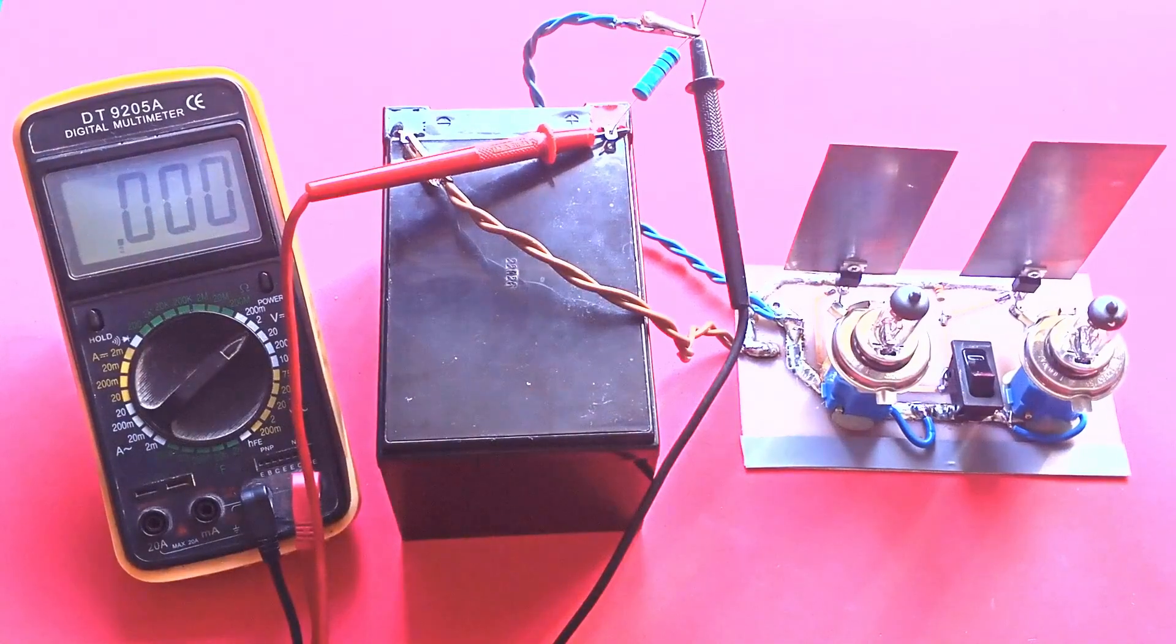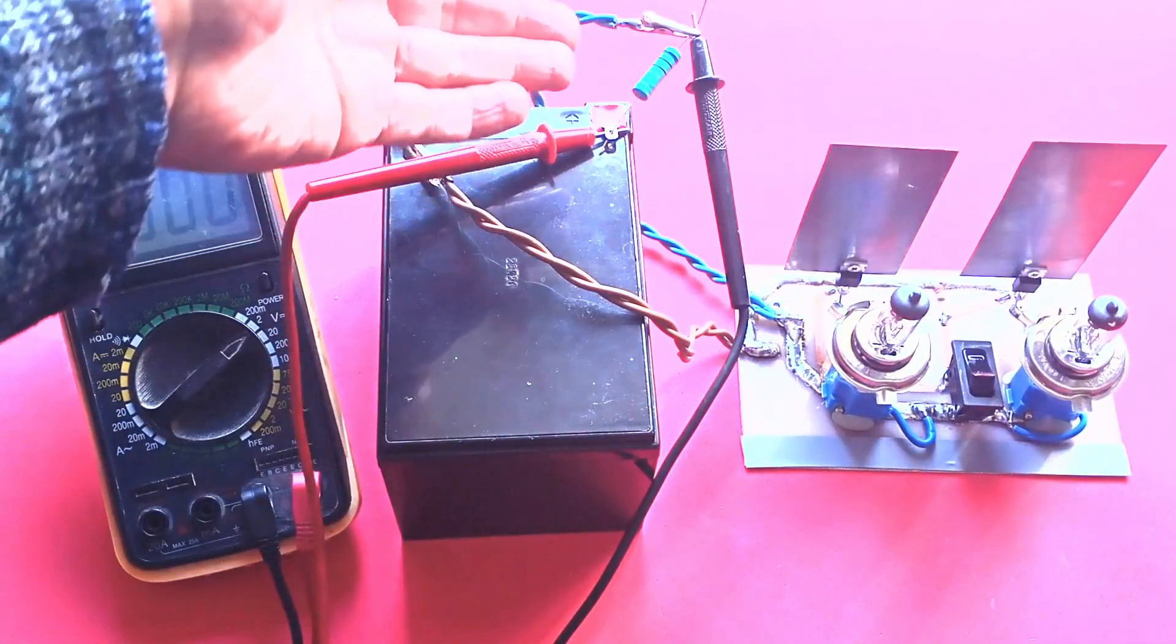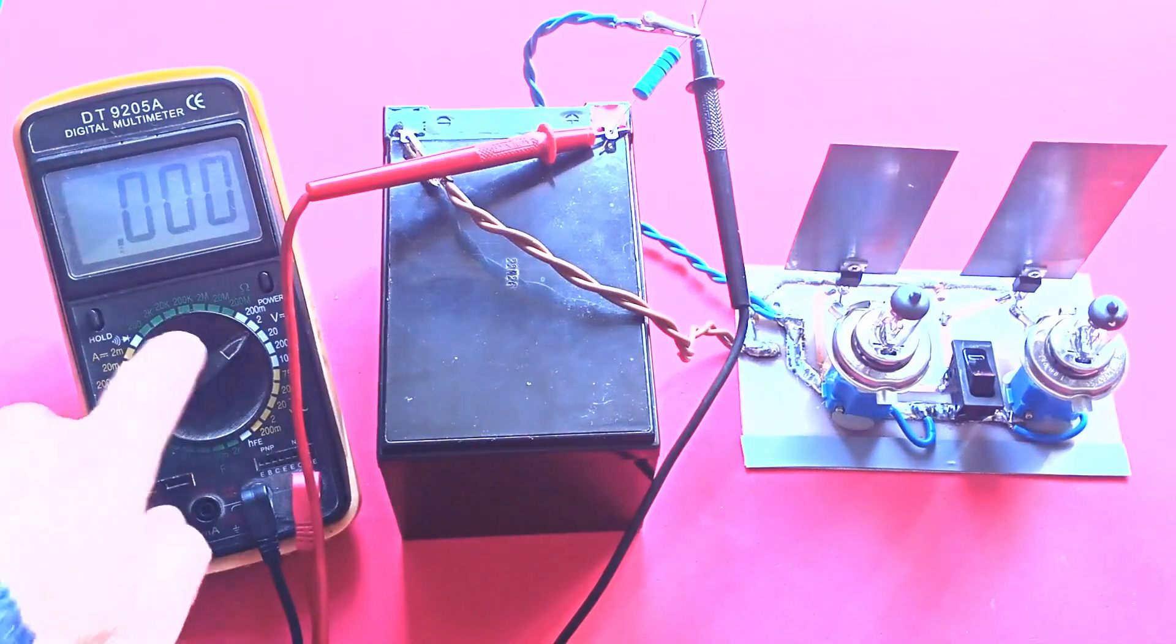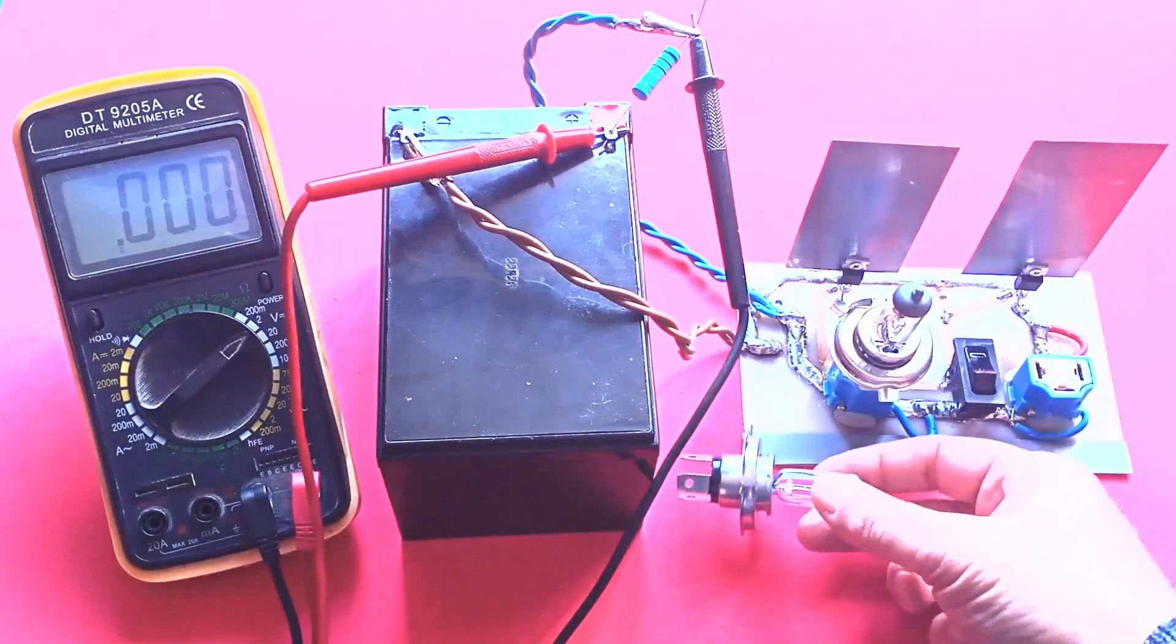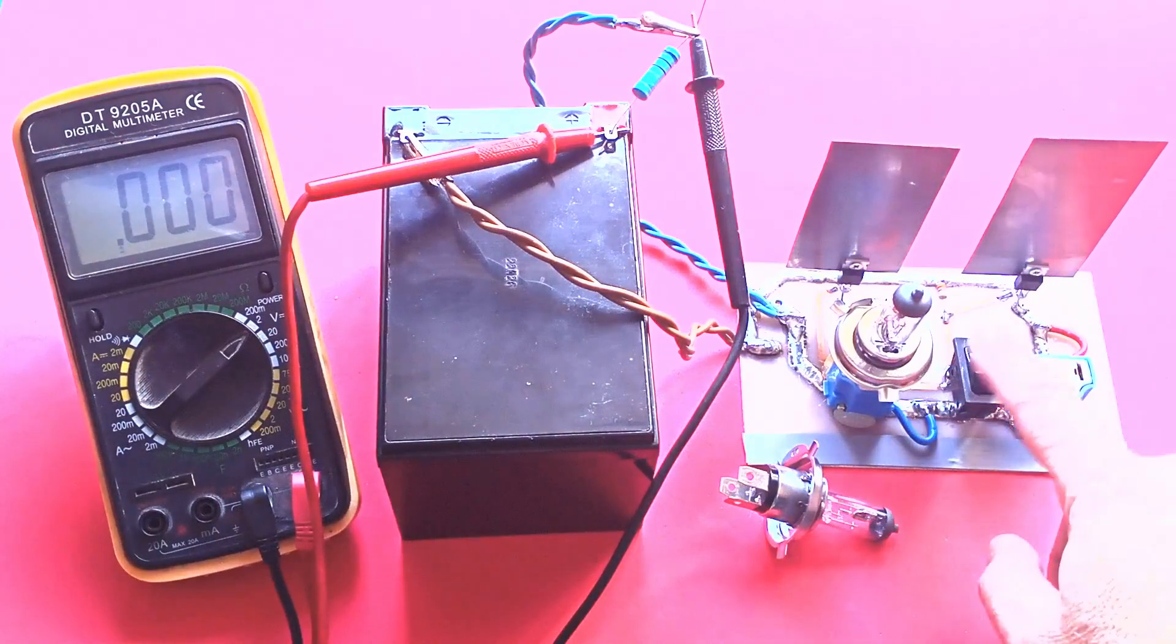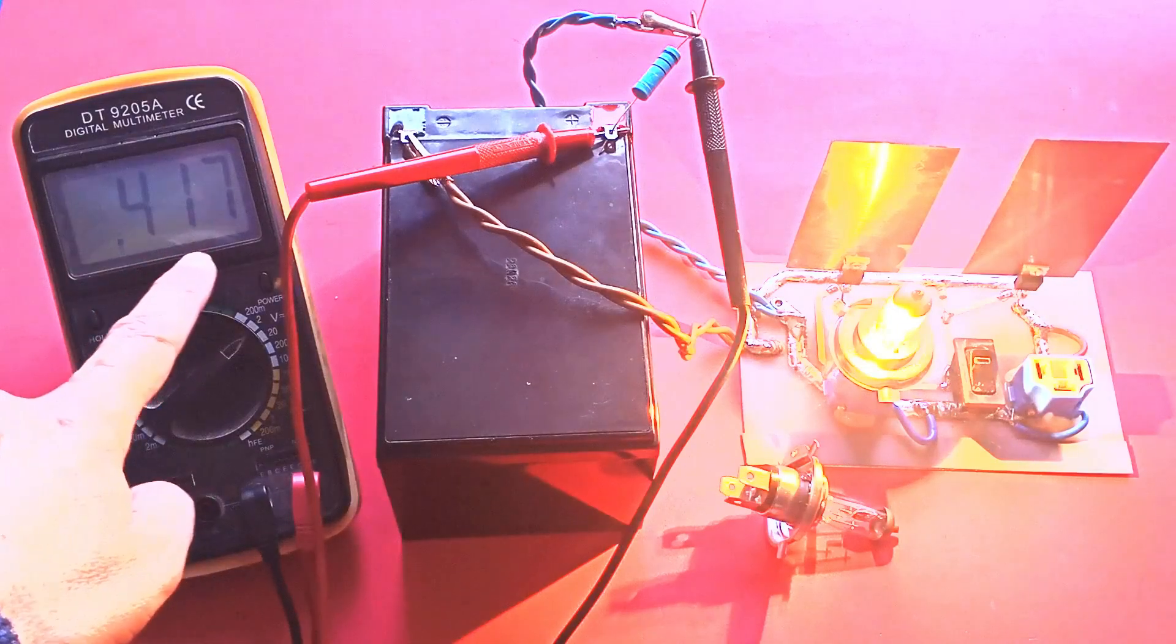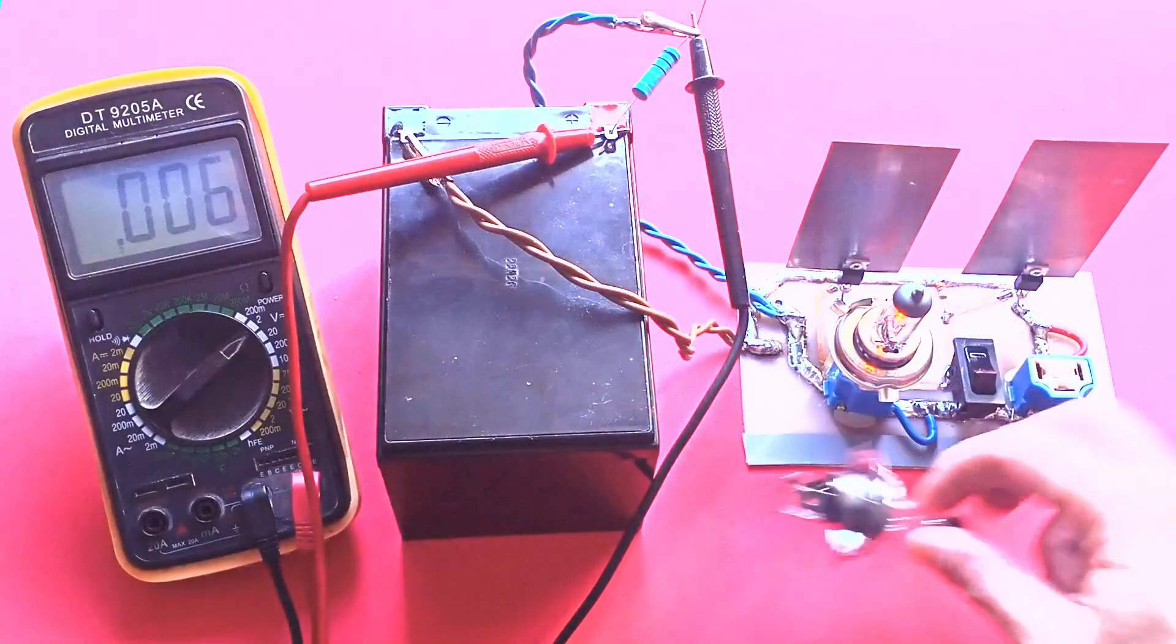The shunt resistor is connected in series with the power supply and the multimeter set to voltage mode is connected across its terminals. First, disconnect the lamp associated with the silicon carbide or SiC MOSFET and leave the one connected to the silicon MOSFET. When the circuit is powered on, the voltage across the shunt resistor is measured at 415 millivolts.